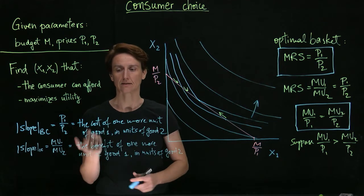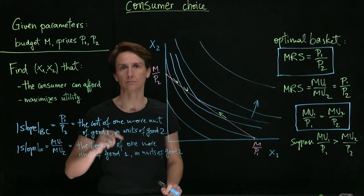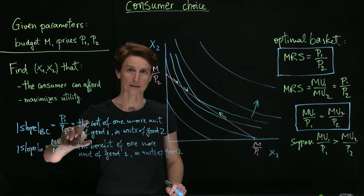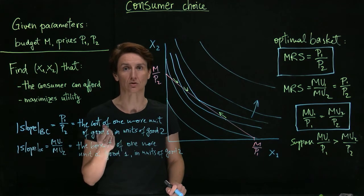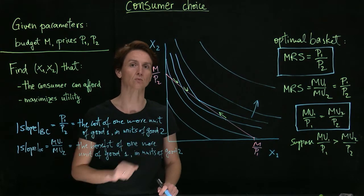If, on the other hand, the cost of a unit of good one is greater than the benefit of a unit of good one, that must mean, conversely, that the benefit of a unit of good two is greater than the cost of a unit of good two. And so we should switch towards buying more of good two.